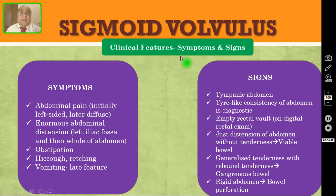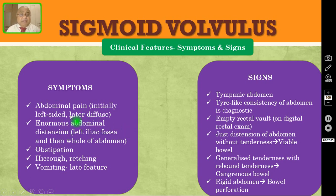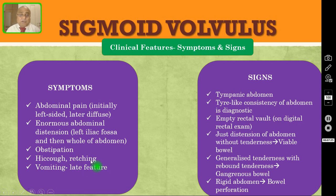Coming to the clinical features — symptoms and signs. The patient will have abdominal pain; initially it is left-sided, left lower quadrant pain, and eventually that becomes diffuse pain all over the abdomen. The very characteristic or pathognomonic finding is enormous abdominal distension — the left iliac fossa and then the whole abdomen get distended. Patient will have obstipation, meaning they are not passing fecal matter and not even passing flatus. Some patients may have hiccough and retching. Vomiting, if it happens, is a very late feature; because it is large bowel obstruction, the patient will have feculent vomiting.